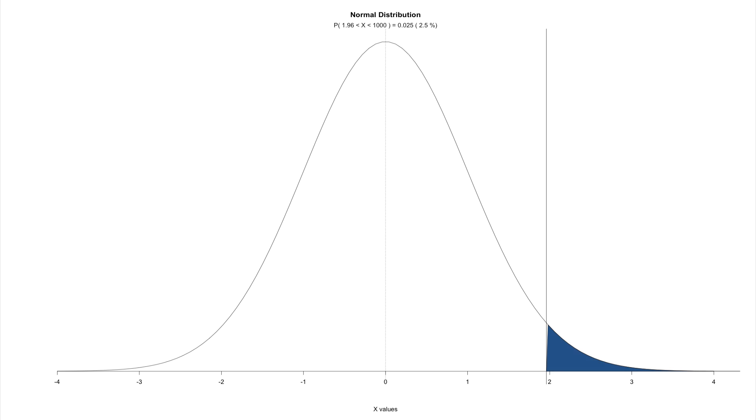When we shade that region in, we see at the top that basically it says from 1.96 all the way to 1,000, and that's actually to infinity, gives you 0.025 or 2.5% of the curve.